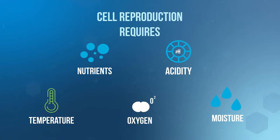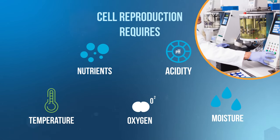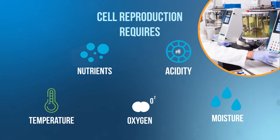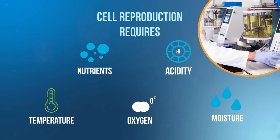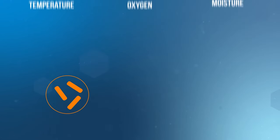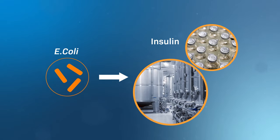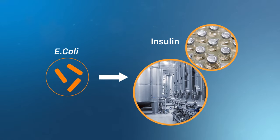These conditions are easily controlled in a lab, making bacteria a popular choice for large-scale protein production. For example, E. coli are used to produce large amounts of insulin for diabetic patients.